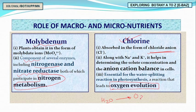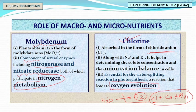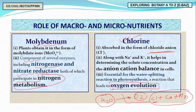Chlorine is absorbed as chloride ions (Cl⁻) and plays a vital role during oxygen evolution in photosynthesis. Water is the source of oxygen released during photosynthesis, and for photolysis of water we need Cl, Ca, and Mn — remembered by the mnemonic 'CalCaMn.' These three elements are required for the water-splitting (photolysis) reaction in the light reaction, producing oxygen. Chlorine also regulates anion and cation balance in cells.